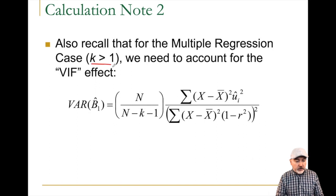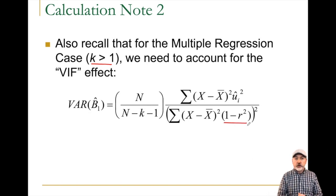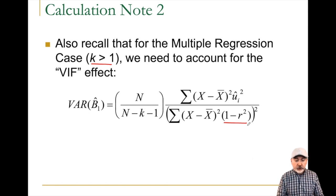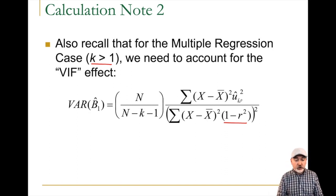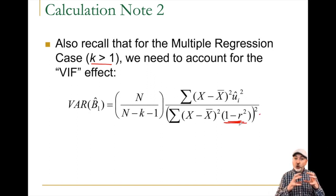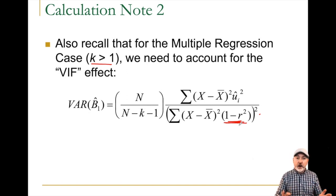In the more realistic case of a multiple regression model, the robust variance formula has a degree-of-freedom adjustment times the sum of (x minus x-bar) squared times u-hat-i-squared in the numerator, and in the denominator the sum of (x minus x-bar) squared times (one minus R-squared), all squared — where that R-squared represents the correlation among our x variables.